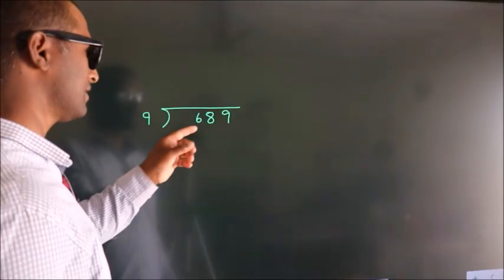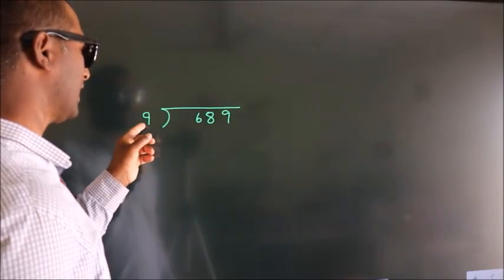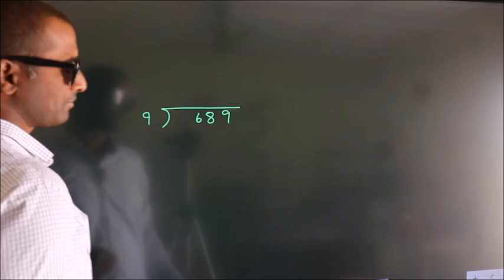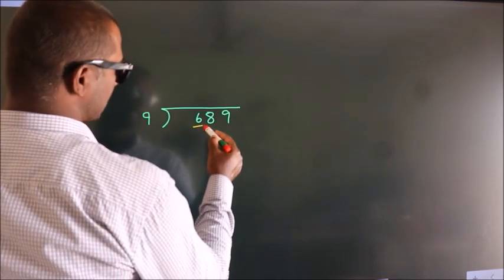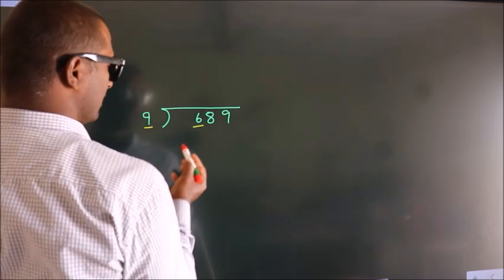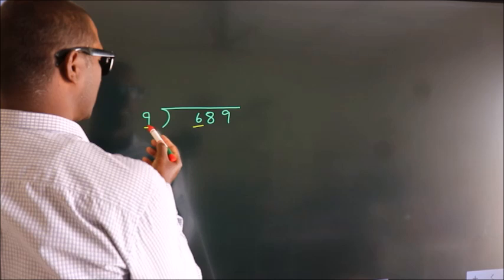How to divide 689 by 9? See, here we have 6, here 9. 6 is smaller than 9.